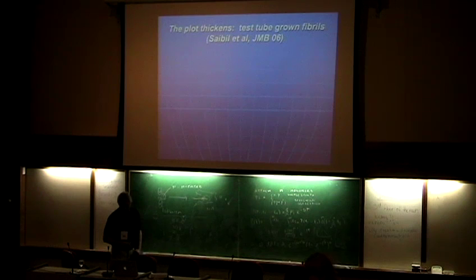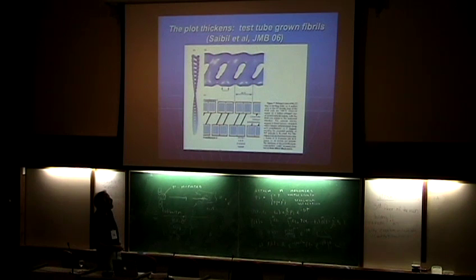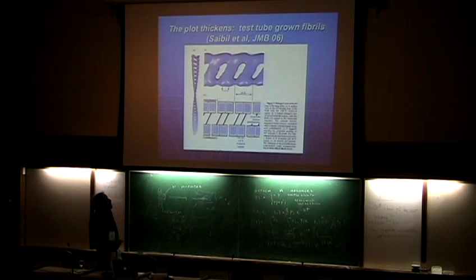This is some more recent work that we've submitted to JMB, based upon data from the Collinge and Saibil groups that appeared in JMB in 2006. This is experimental data interpreted from electron diffraction. This is a prion fibril - it's very different from the Alzheimer's fibril. It's 30-angstrom resolution, so not as highly resolved as the Alzheimer's fibril, but it's very different from a lot of fibrils that have been found. This was grown in a test tube.